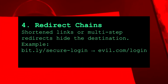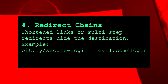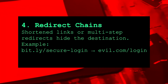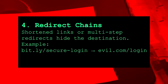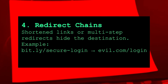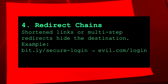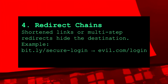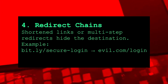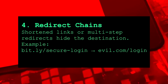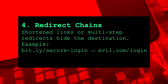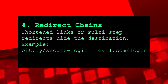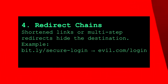Redirect chains — also known as link shorteners or hidden routes. This is where you click on a short or indirect link and it bounces you through several redirects before landing on the final malicious site. Why it works: you can't see the final destination until it's too late. URL shorteners are used so frequently in marketing that most people just trust them without checking.